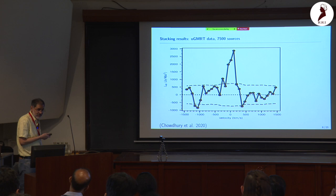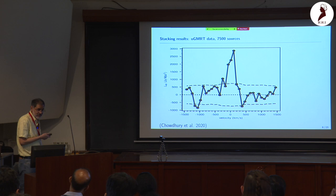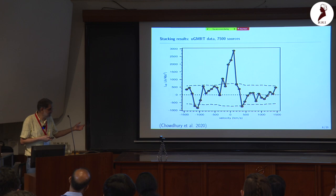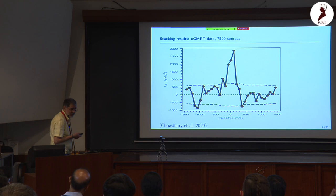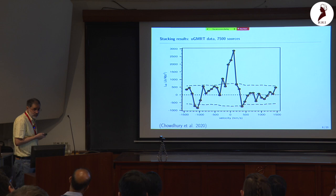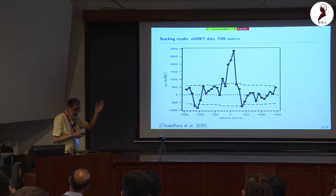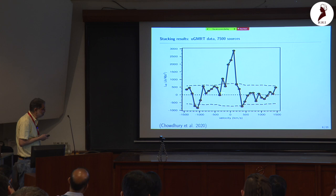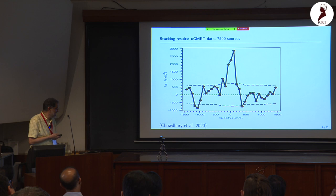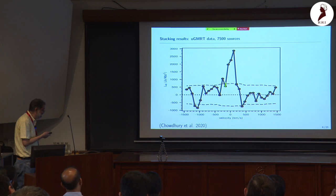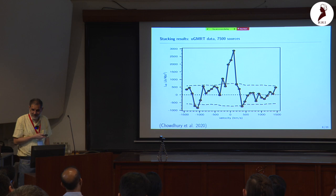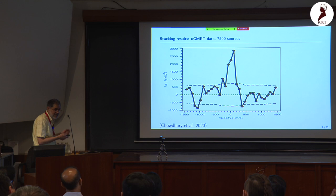That happened in 2020. It was detected with uGMRT data — the difference from GMRT is that uGMRT has far larger bandwidth. It used 7500 DEEP2 sources over a broad redshift range and achieved a roughly five-sigma detection with a halo mass of 10^10 solar masses. A similar detection was also achieved using legacy GMRT data with around 450 observing hours.